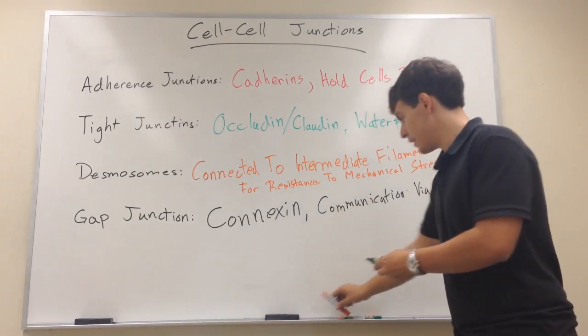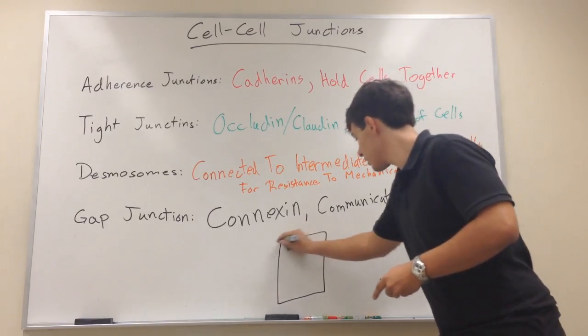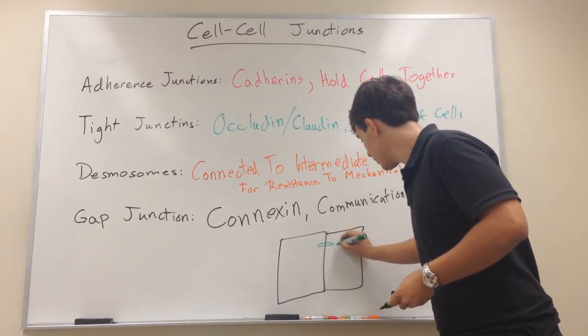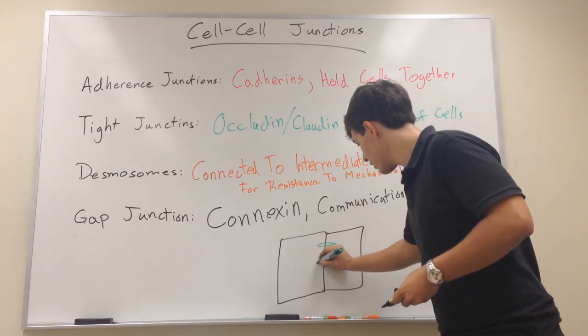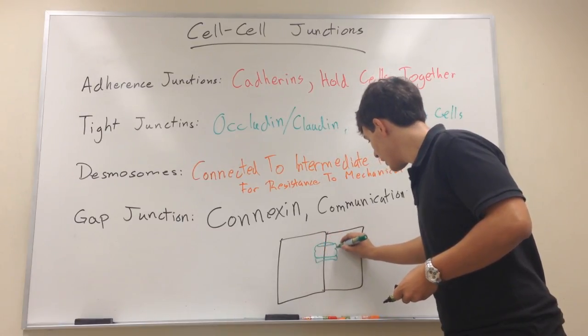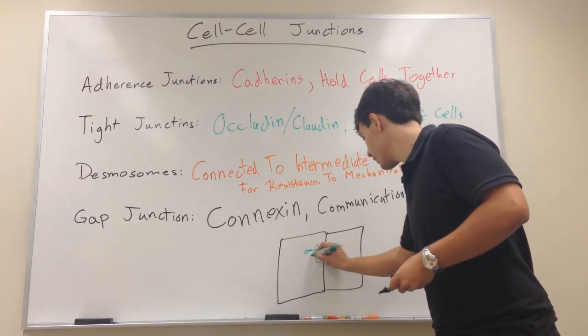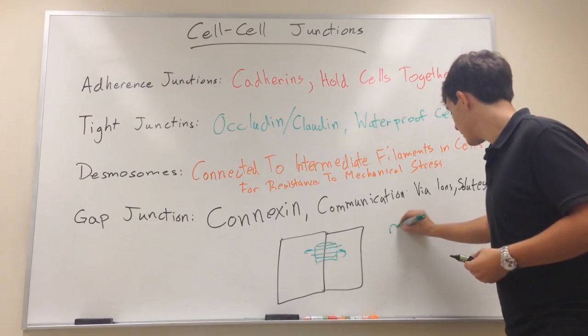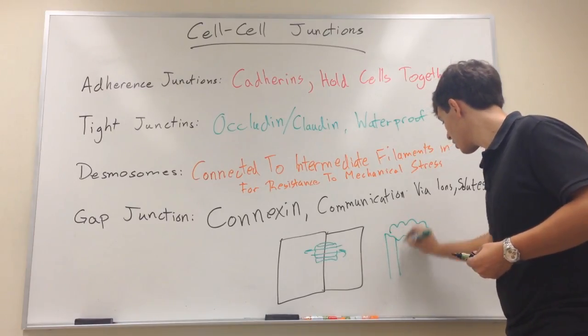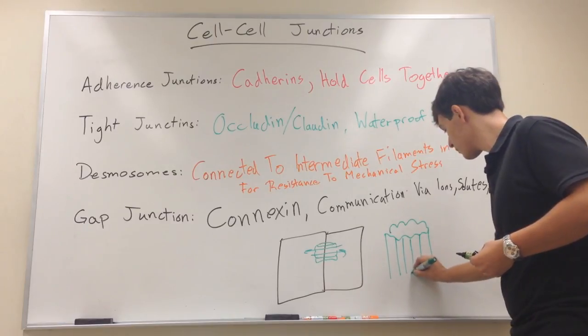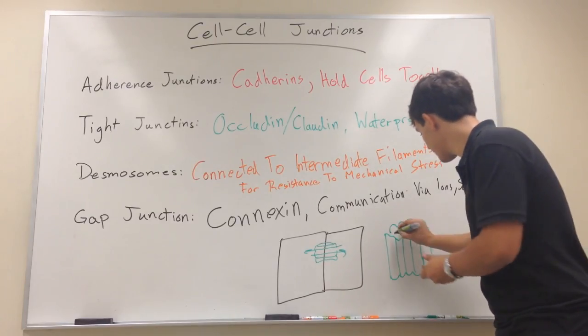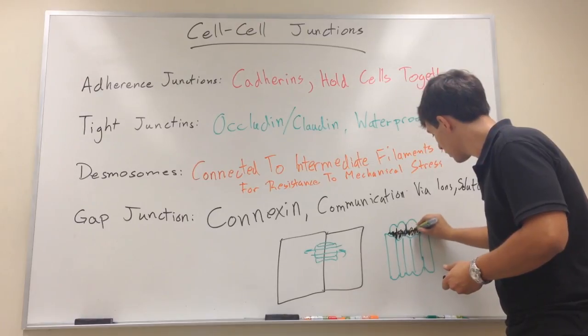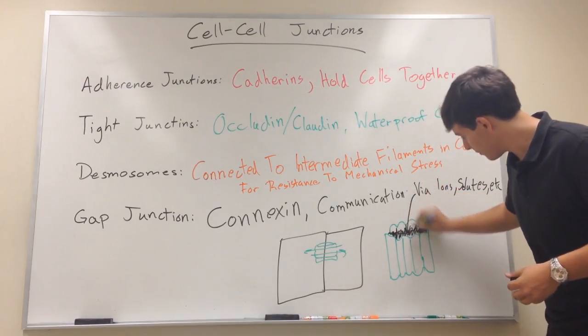And what it looks like is we have two cells, and it's almost like a channeled looking thing, where there's these subunits that form together, and there's this opening in between them where solutes can flow freely in between it, and they can speak via that. Let's see if I can try to draw it. And basically, you can imagine there's a big hole in the middle of this complex where things can flow through it and go from one cell to another cell.